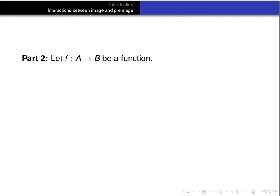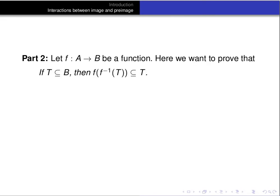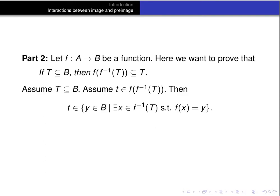Now let's prove part 2. Suppose f is a function from A to B. Our goal is to prove that if T is a subset of B, then the image of the pre-image of T is a subset of T. Assume T is a subset of B, and let little t be an element of the image of the pre-image of T. From the definition of the image of a set, the image of the pre-image of T is all y in B such that for some x in the pre-image of T, f(x) equals y. So there exists an s in the pre-image of T such that f(s) equals t.